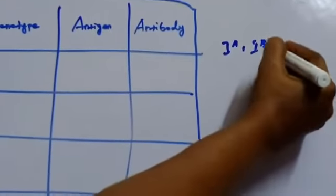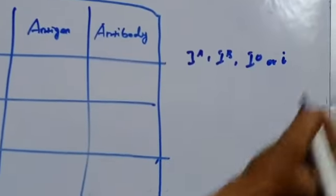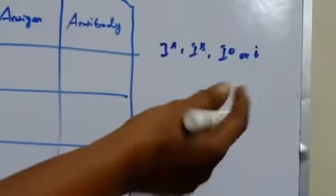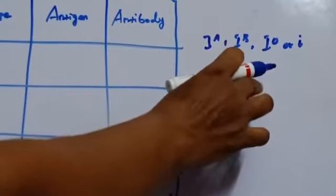IA, IB, IO. This IO is otherwise can be written as small i. This IA and IB are dominant over this O group.